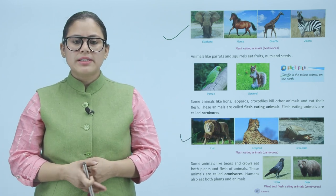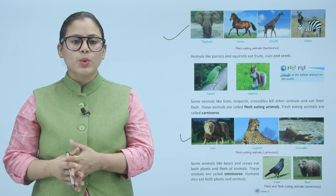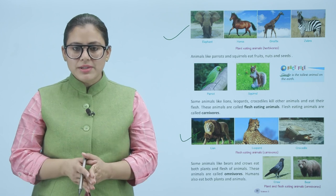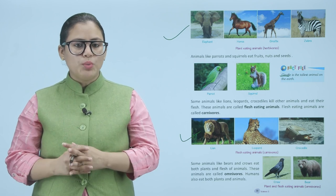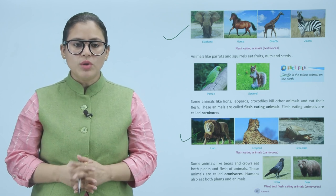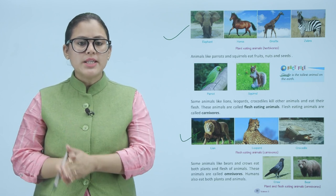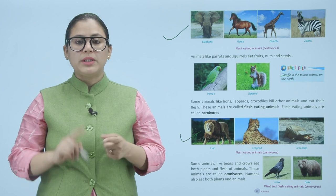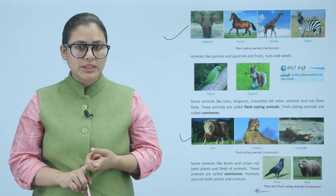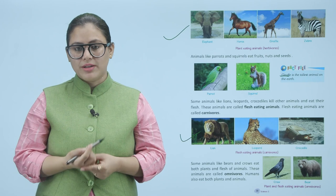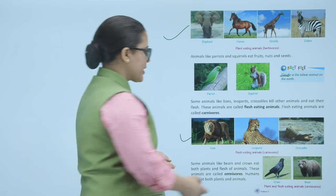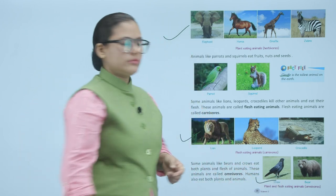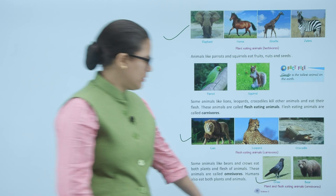Some animals like bears and crows eat both plants and flesh of animals. These animals are called omnivores. Humans also eat both plants and animals, so humans are omnivores too. For example, crows and bears are omnivores.